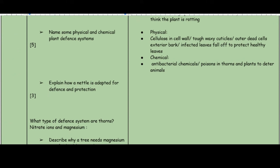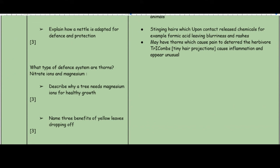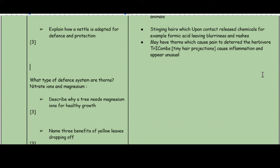Explain how a nettle is adapted for defense and protection. Stinging hairs upon contact release chemicals such as formic acid, leaving blurriness and rashes to ward animals off. It may also have thorns which cause pain to deter herbivores, and trichomes — tiny hair projections — lead to inflammation. Note that thorns are a mechanical/physical defense system.